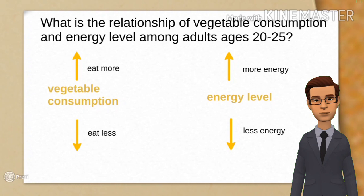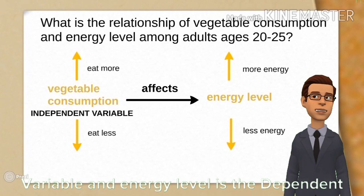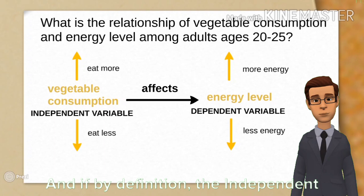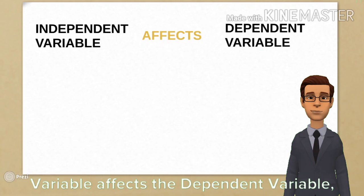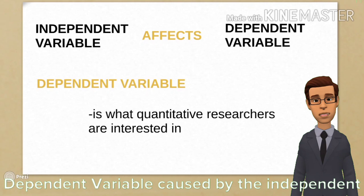Therefore, vegetable consumption affects energy level. Vegetable consumption is the independent variable, and energy level is the dependent variable. And by definition, the independent variable affects the dependent variable. Please note that quantitative researchers are interested in the variation of dependent variable caused by the independent variable.